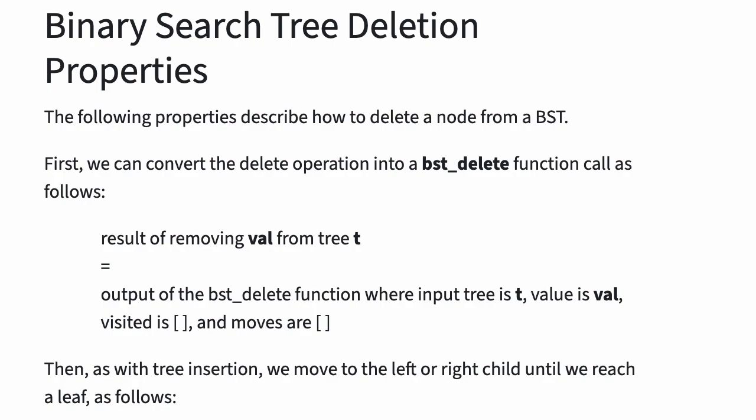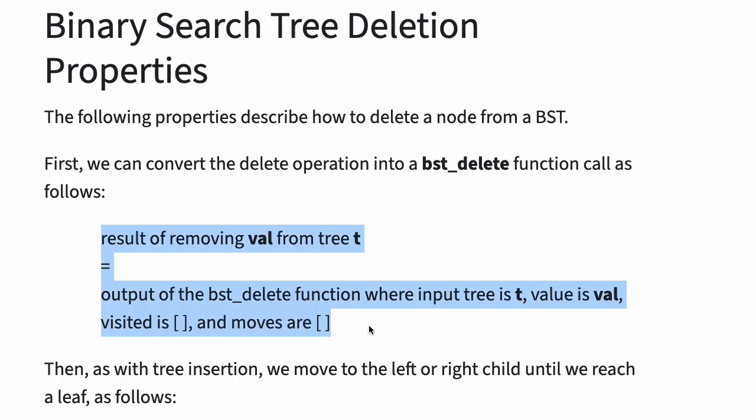The following properties describe how to delete a node from a BST. We can convert the delete operation into a BST delete function call as follows: the result of removing val from tree t is equal to the output of the BST delete function where input tree is t, value is val, visited is empty, and moves are empty.